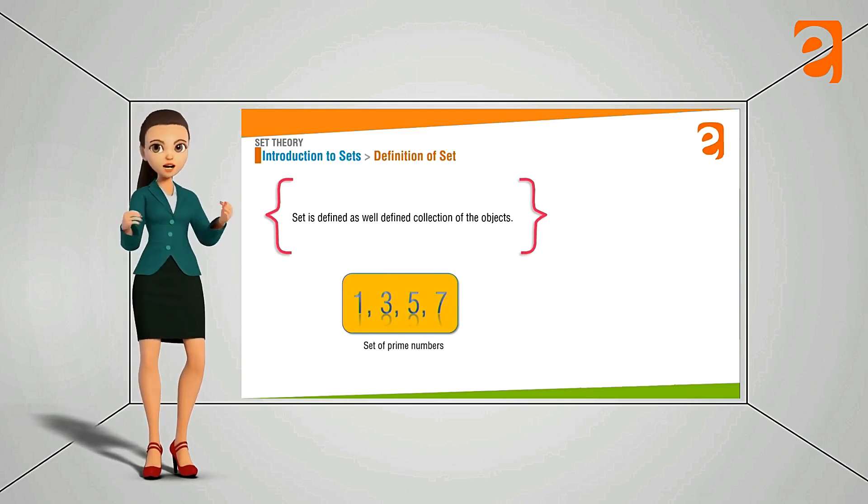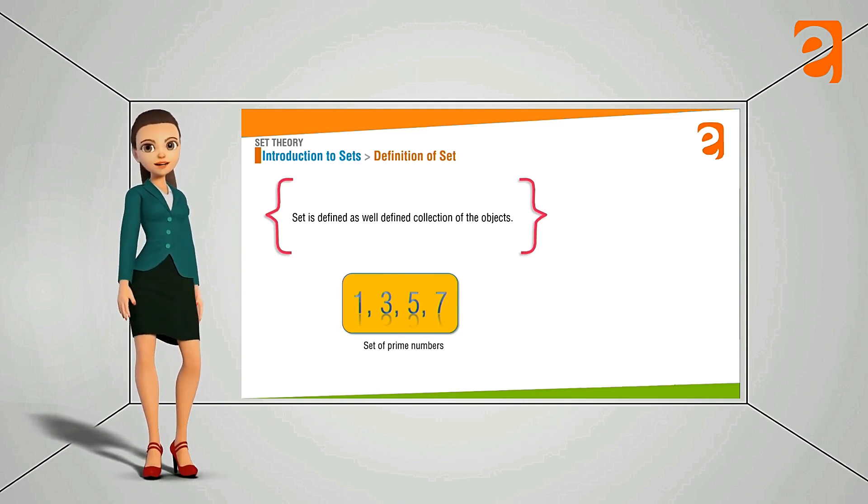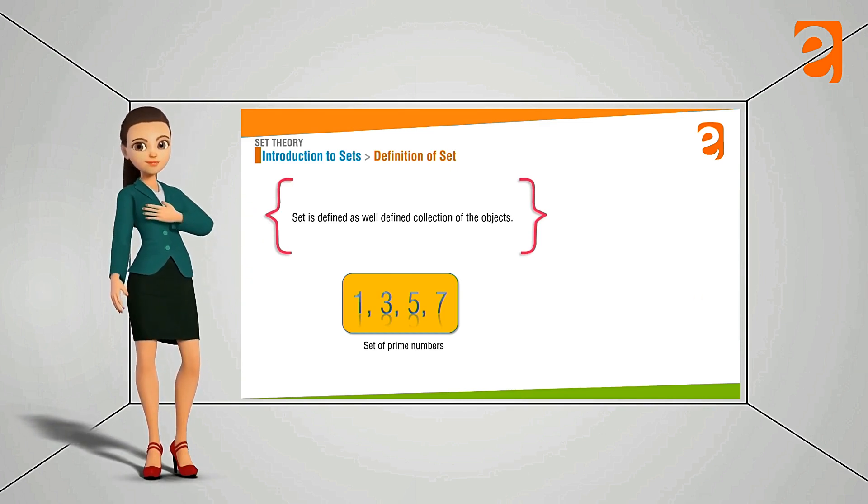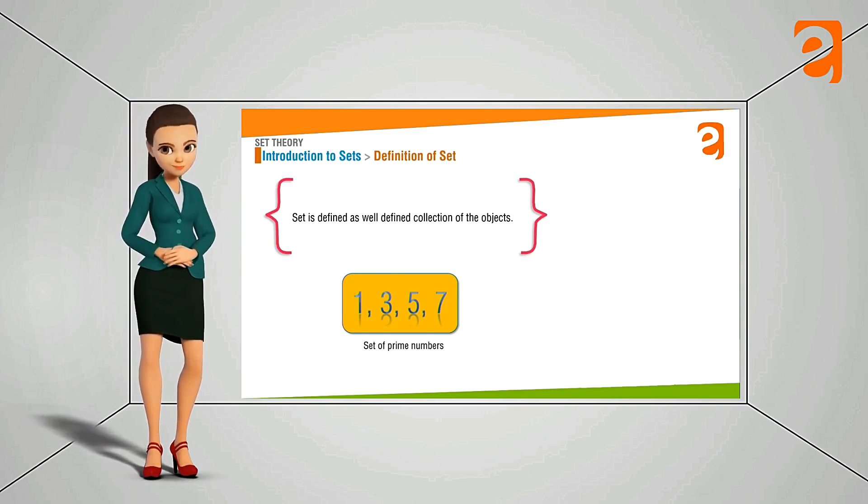We are saying that these are the prime numbers. Means that in this set we are keeping only those numbers which are prime numbers. We cannot keep 2 here, we cannot keep 4 here. So whatever the number will be here they have a property that it is either divisible by the number itself or by the number 1. So this is well-defined collection.